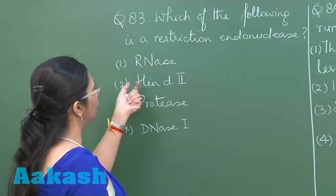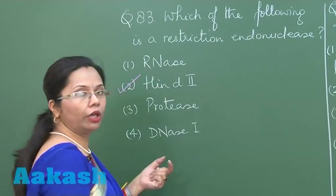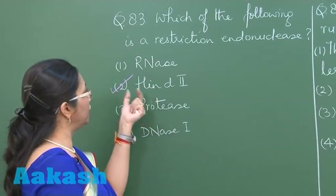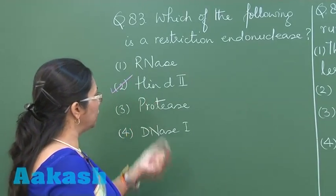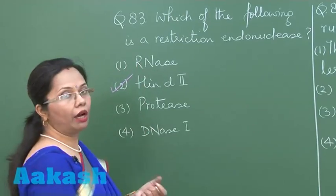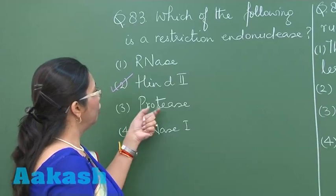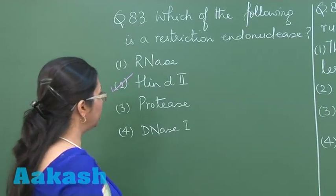The answer is choice 2, Hind II. This is a restriction endonuclease obtained from the bacteria Haemophilus influenzae strain D. The rest - RNase and DNase - are enzymes digesting RNA and DNA respectively. Protease digests proteins.